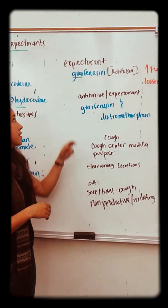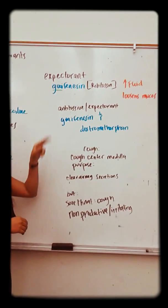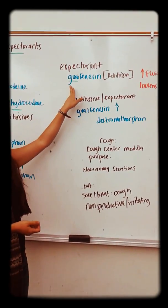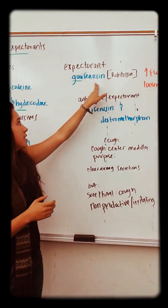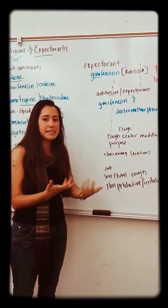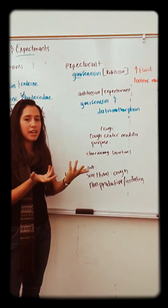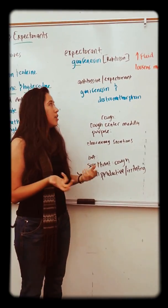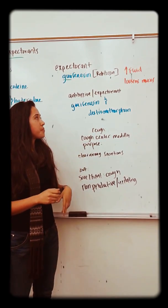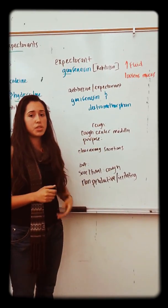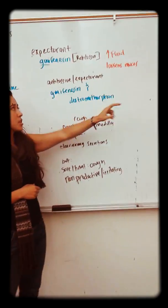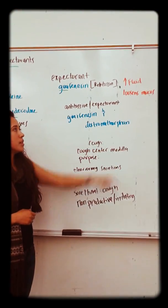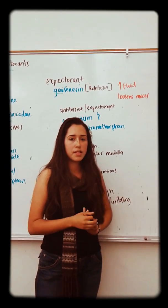The last drug is the expectorant. Expectorants help expel mucus. The main drug is guaifenesin — many people know it as Robitussin. You should increase fluid intake to help loosen the mucus. Guaifenesin loosens mucus so it can be cleared. There's also a combination drug of guaifenesin and dextromethorphan. Those are all the drugs covered in the book for this chapter.